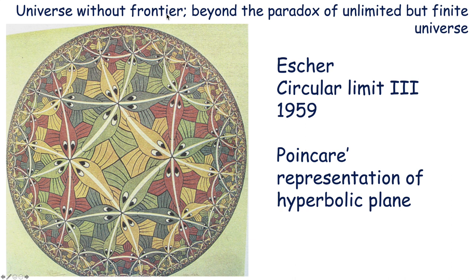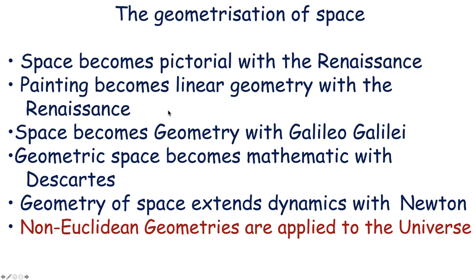Geometrically we can already imagine a universe which is beyond the paradox — unlimited but finite. Poincaré thought of this representation of the universe already at the end of the 1800s, just before Einstein. To summarize the process of geometrization of space: space became pictorial with Renaissance painting, became linear geometry with Renaissance space, became mathematics with Descartes, geometry of space extends to dynamics with Newton, and non-Euclidean geometries are applied to the universe.